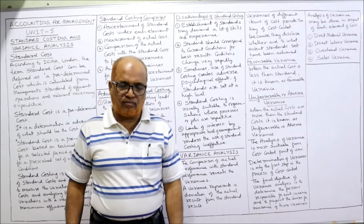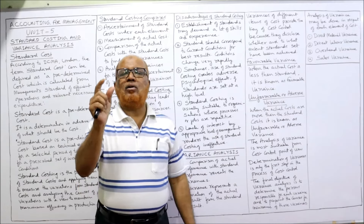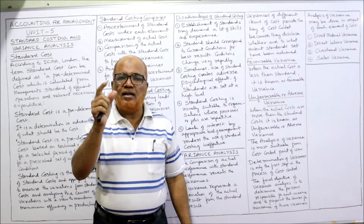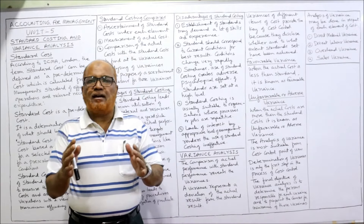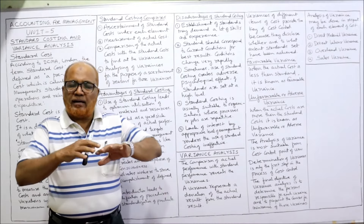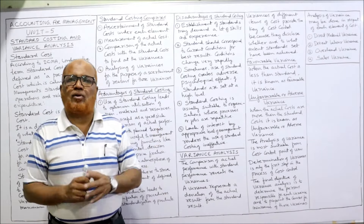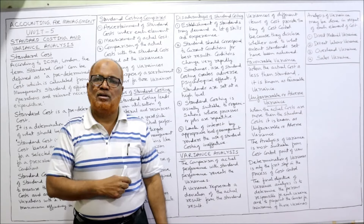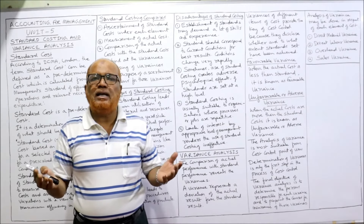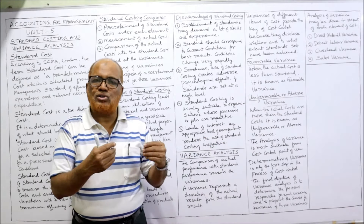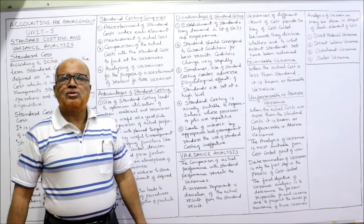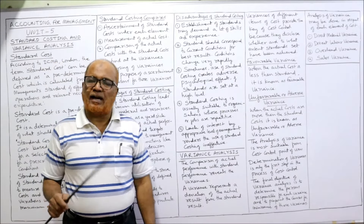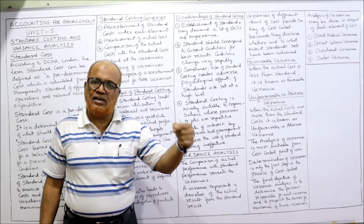Next: lack of interest by appropriate levels of management makes the use of standard costing ineffective. The standard costing concept must be understood and accepted by all levels of management. We cannot apply standard costing in only one area — it should be applied for all the elements of cost. It requires the coordination and cooperation of different levels of management. If the different levels of management are not coordinating, then standard costing will fail to provide the results.